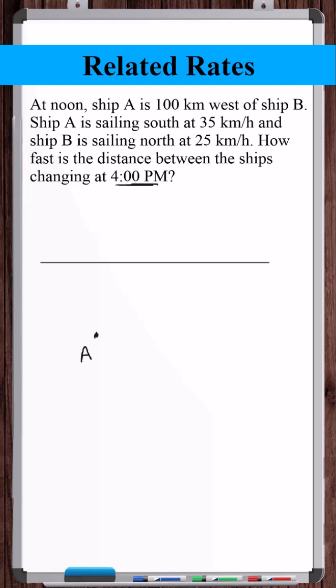Ship B sailing north, but at a slower rate at 4 p.m., it's here. So this is at 4 p.m. At 4 p.m., how fast is this distance changing? We need some equation for this distance D that relates ship A and ship B. Let's see if we can use right triangles to relate A, B, and D.